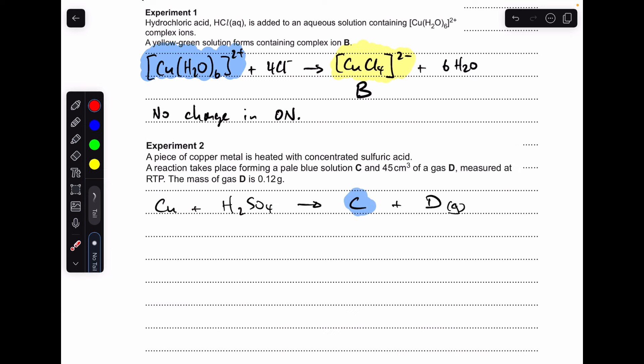Moving on to experiment 2, so I've got the beginnings of the equation here. Copper metal is heated with concentrated sulfuric acid. We've got this blue solution C, which is going to be copper sulfate, and we've got 45 cm³ of gas D. So we're going to do a little calculation using this information to work out what D is. The first thing we're going to do is work out how many moles of D we've got. So 0.045 dm³ divided by 24, the molar gas volume, we get that many moles. And now to calculate the MR, we just go mass over moles.